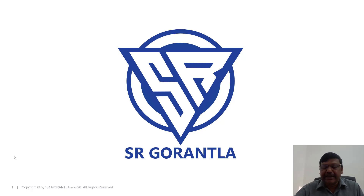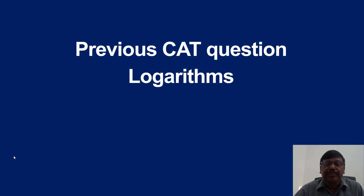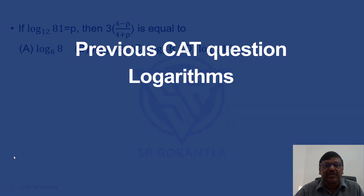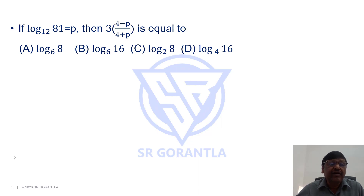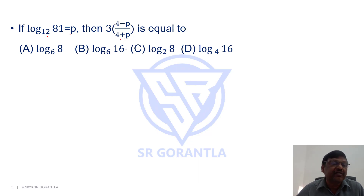Hello students, welcome to my channel. In this session we will discuss a previous CAT question — a question on logarithms. Here comes the question: if log 81 base 12 equals p, then find 3 into (4 minus p) by (4 plus p).